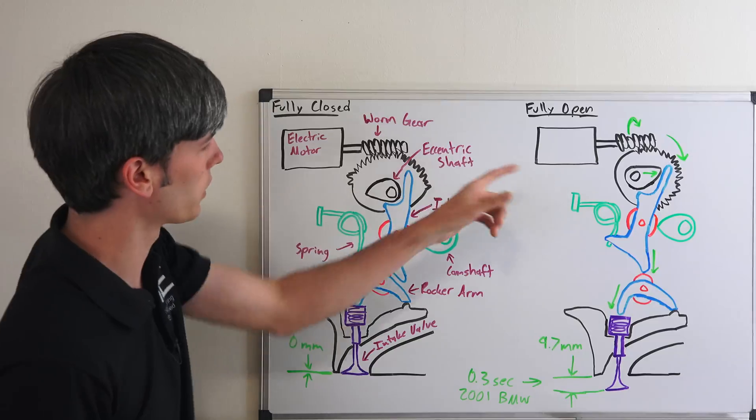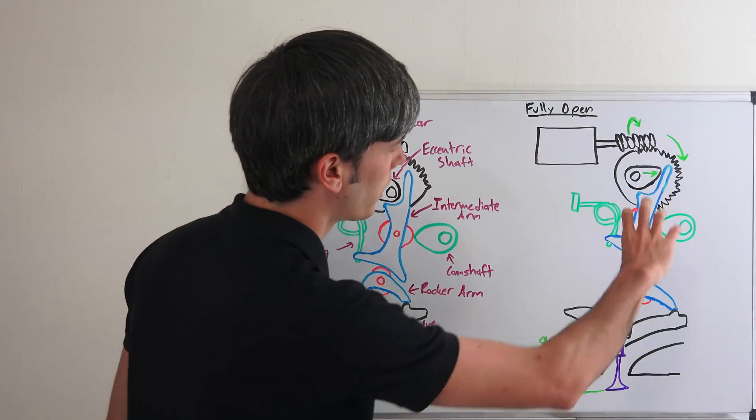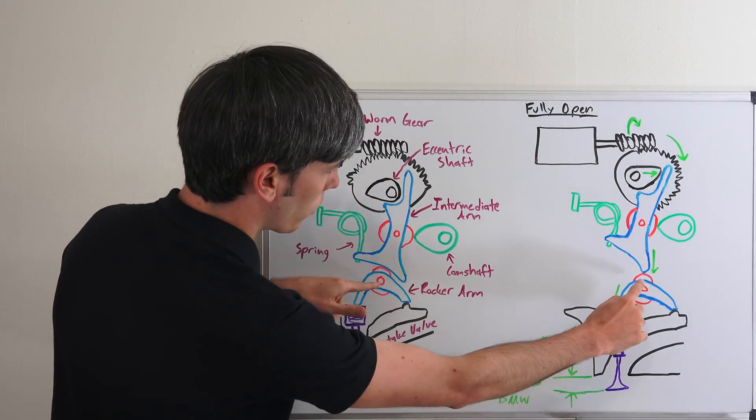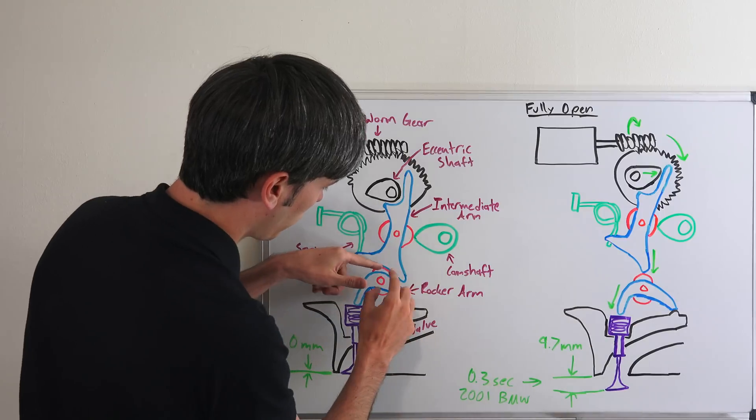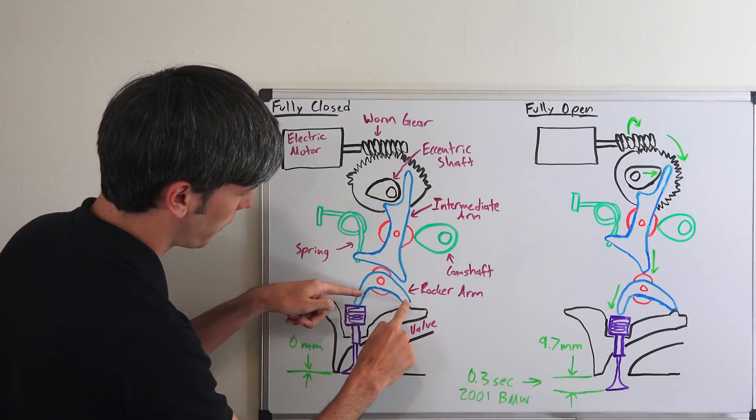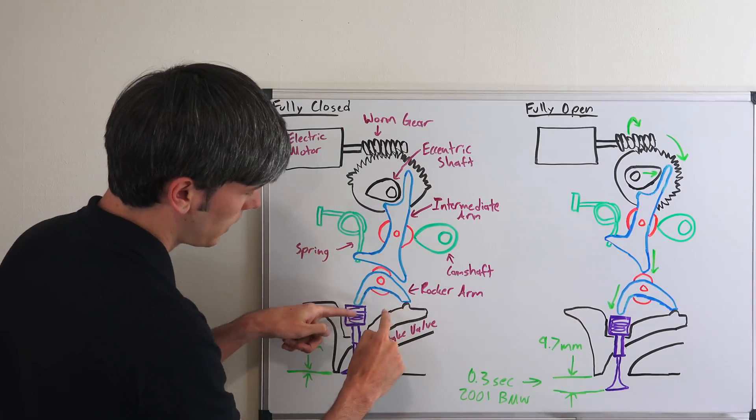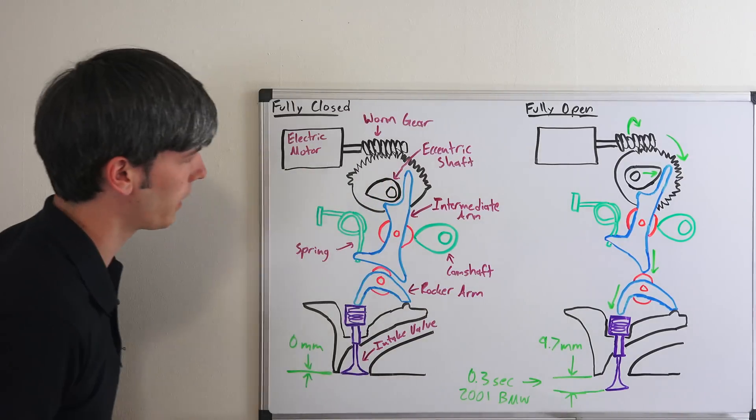Here where we have it fully open, you can see it's rotated all the way. Now this bottom portion is right up against that roller, which means this part has to be forced down. It's pivoting here and pushing that down, and as it pushes it down, it opens up that valve.